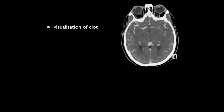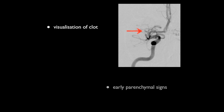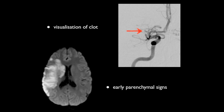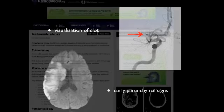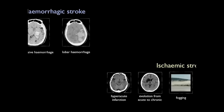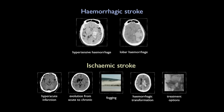In summary, the imaging of acute cerebral ischemia revolves around either detecting the clot or detecting early parenchymal changes. This is most commonly done with CT, but can also be performed with MRI if available. More information and many additional cases are available on radiopaedia.org. Make sure you check out the other episodes in this series on imaging of stroke. See you next time.